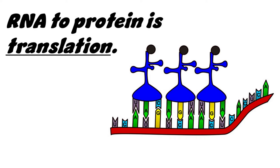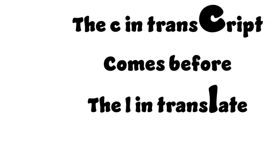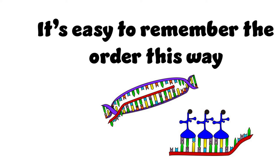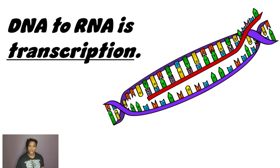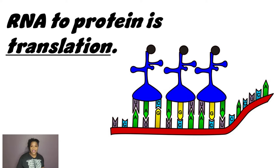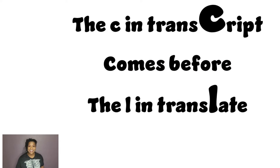DNA to RNA is transcription. RNA to protein is translation. See a trust field comes in for the L and translate — it says it'll remember the order this way.